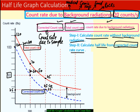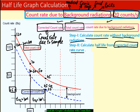From the corrected count rate curve, we can now calculate half-life. When 100 becomes 50, the time taken is 300 seconds — that is the half-life. When 50 becomes 25, the time taken is again 300 seconds, confirming that the half-life is 300 seconds.